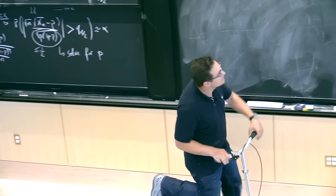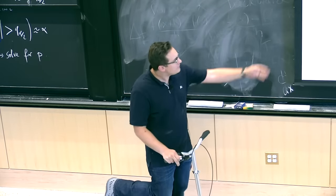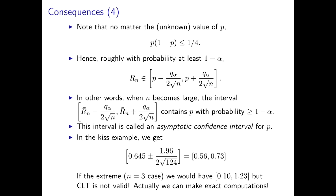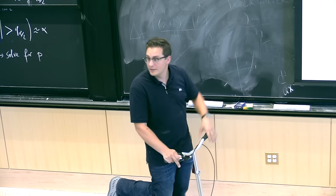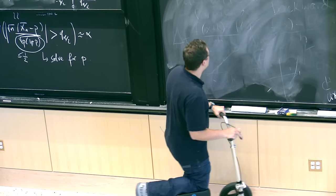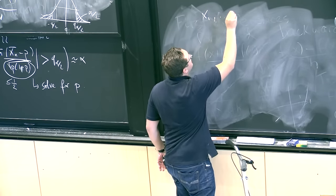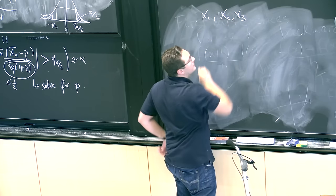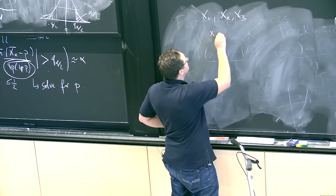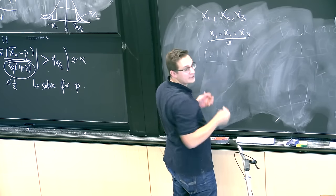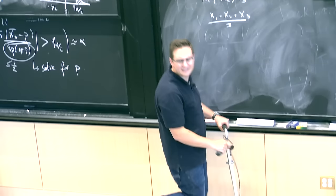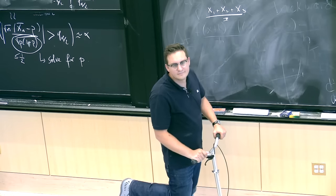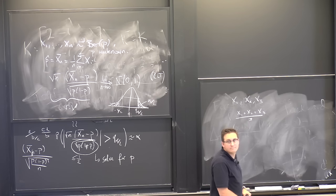That's what we did for the KISS example. In the extreme case when n equals 3, the CLT would not be valid, and the pivotal distribution is not the normal distribution — it might be something else, and we can make exact computations. If I have three observations x1, x2, x3, I take their average as my estimate. How many values can this average take?